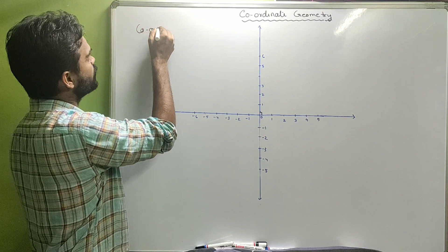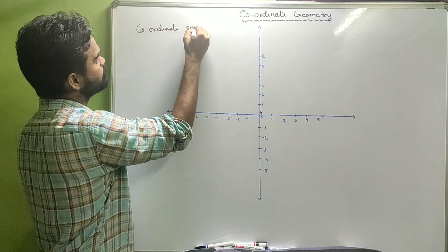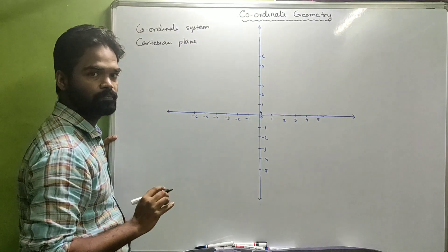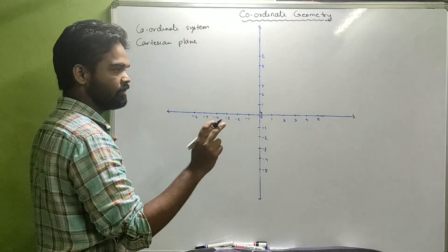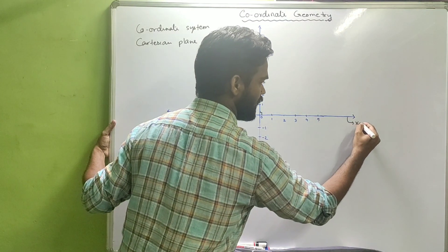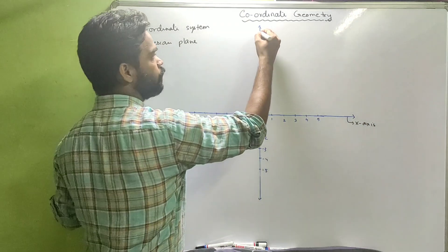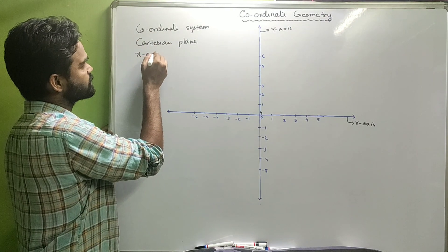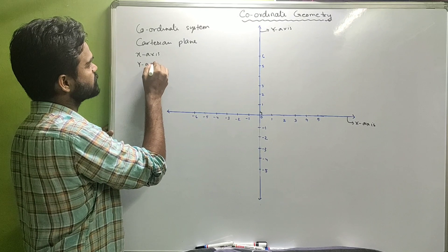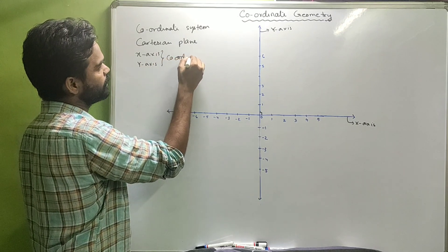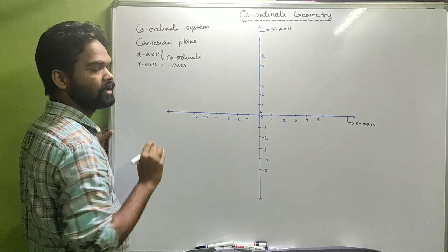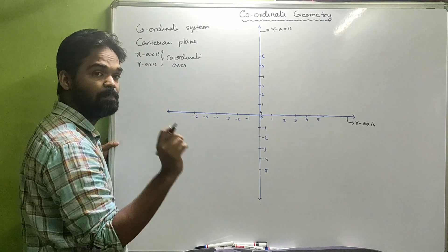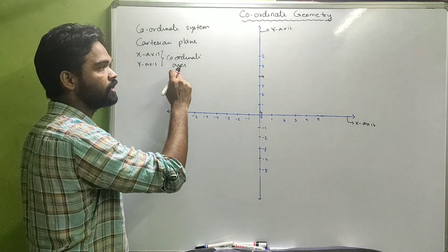The horizontal number line is known as the x-axis. The vertical number line is known as the y-axis. Together, the x-axis and y-axis are known as coordinate axes. Any point in this plane can be represented with the help of these two coordinate axes.